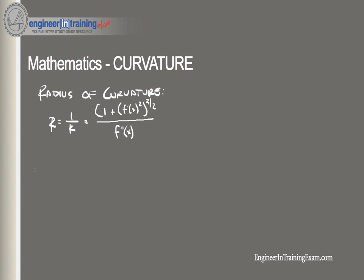Let's look at an example. We want to determine the radius of curvature at x equals 1 of a curve defined by the equation f of x is equal to 2x to the third minus x plus 3. The first thing we need to do is find the first and the second derivative. So f prime equals 6x squared minus 1, and f double prime is equal to 12x.